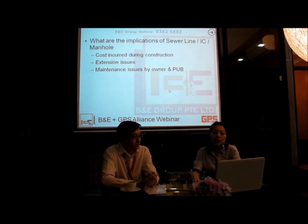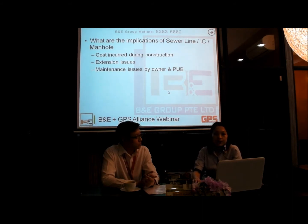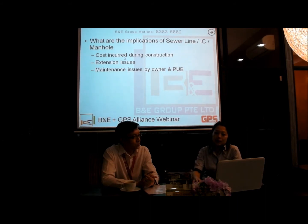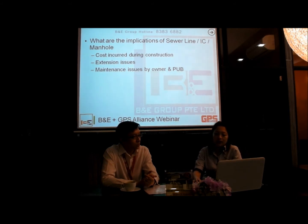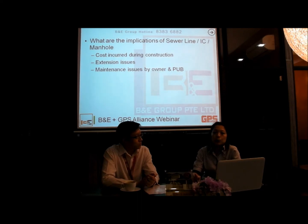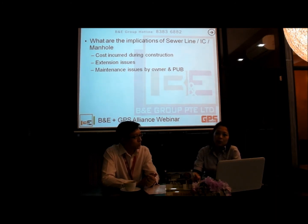What are the implications of sewer lines, ICs, and manholes? They will usually affect the selling price by a few percentage points. They will definitely incur additional construction costs and indirectly affect the selling price. These are especially relevant for older properties where further extension is planned — if there is a sewer line, there will be a need to construct an RC trench to protect it, and all of this will increase construction costs.